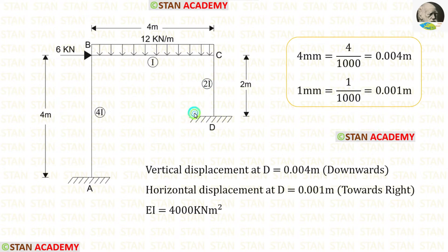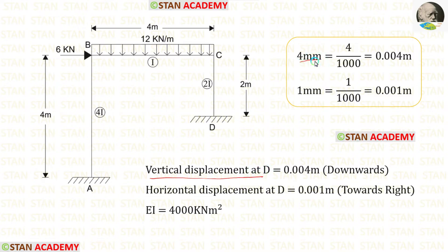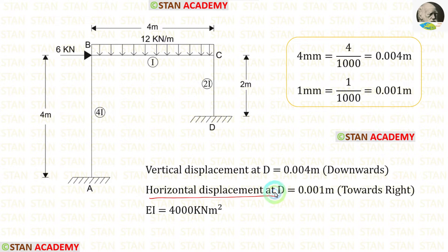In this frame, support D is yielding. The vertical displacement at support D is 4 millimeters, which converts to 0.004 meters, and it occurs downwards. The horizontal displacement at support D is 1 millimeter, which converts to 0.001 meters, and it occurs towards the right side.